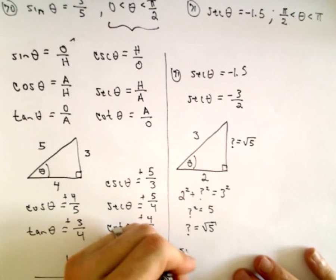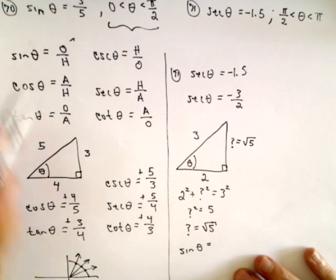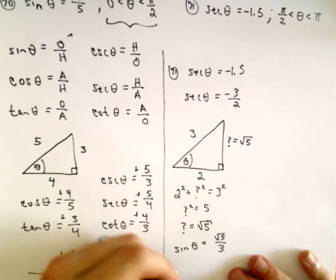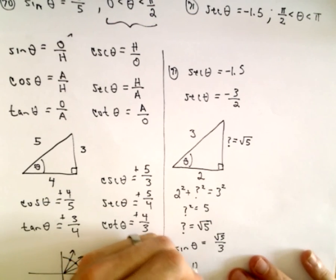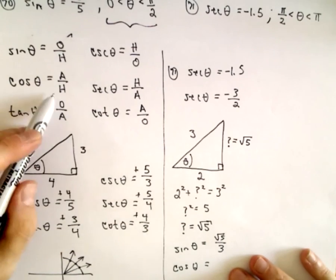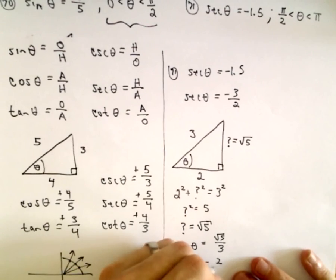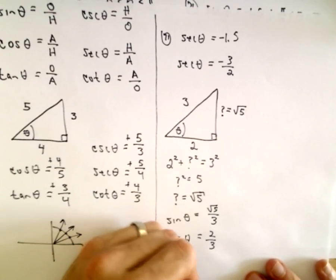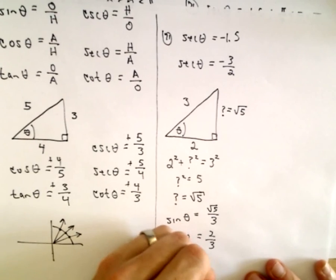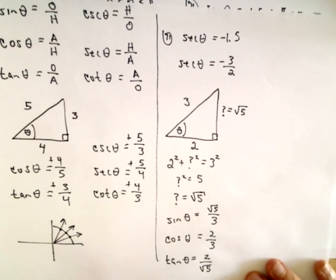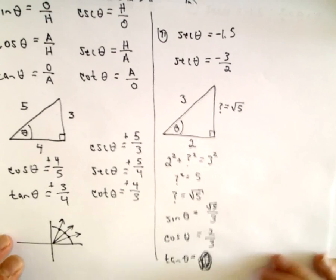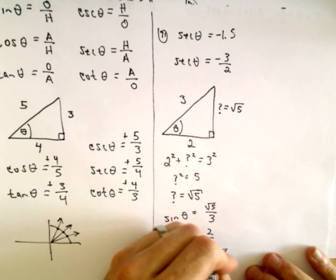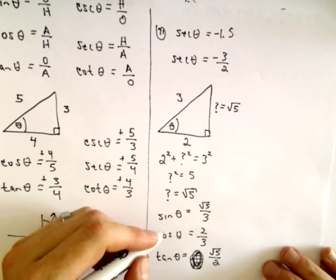So now I can just read off. So sine of theta, that's going to be the opposite to the hypotenuse, so the square root of 5 over 3. Cosine of theta, that's going to be the adjacent to the hypotenuse, so 2 thirds. And we'll worry about signs here in a second. Tangent, that's the opposite over the adjacent. Whoops, I got this backwards. I said it and I'm looking at it and I'm getting ahead of myself. So the opposite is clearly the square root of 5 and the adjacent is 2.